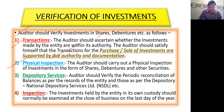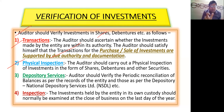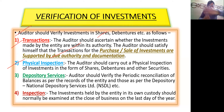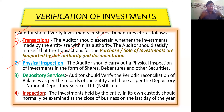The second point is physical inspection. The auditor should carry out a physical inspection of investments in the form of shares, debentures, and other securities — examining the proof and documents related to where investments have been made, and obtaining confirmation where necessary.